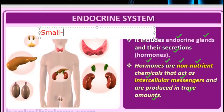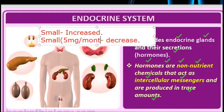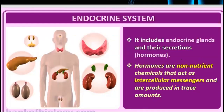If the hormone level is a little more than normal, we will have a disease. If it decreases, we will also have a disease. For example, suppose the normal level is 5 mg per month — if it is 4 mg or more than 6 mg per month, it will cause disease. So for the endocrine system, the proper amount of hormones is very important. Hormones are non-nutrient chemicals that act as intercellular messengers and are produced in trace amounts.